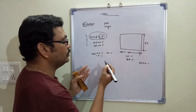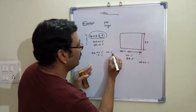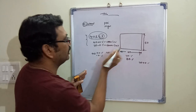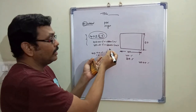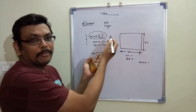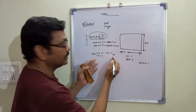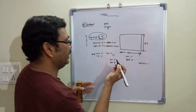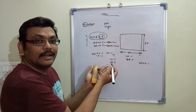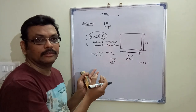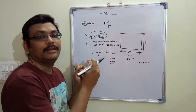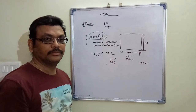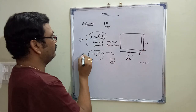This introduces the concept of upper limit and lower limit. The upper limit is the maximum value the dimension can reach — in this case 40.5. The lower limit is the minimum value — in this case 39.9. It should not decrease below 39.9. This condition is decided based on the mating part or the application where the component will be assembled.